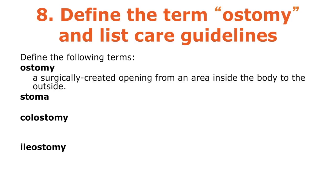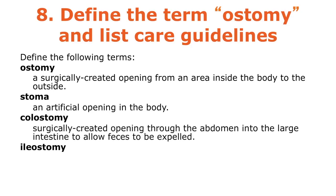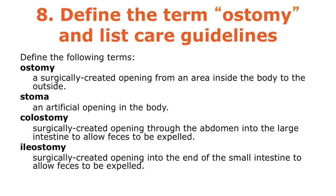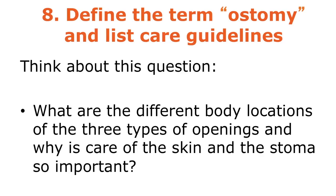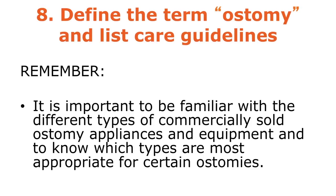An ostomy is a surgically created opening from an area inside the body to the outside. A stoma is the artificial opening. A colostomy is a surgically created opening through the abdomen into the large intestine to expel feces. An ileostomy is a surgically created opening into the end of the small intestine to allow feces to be expelled.